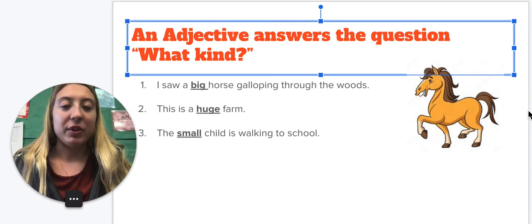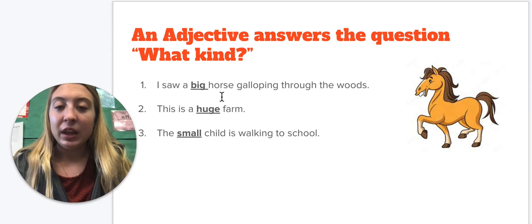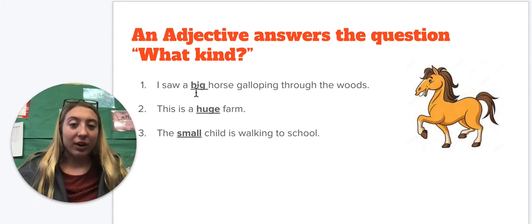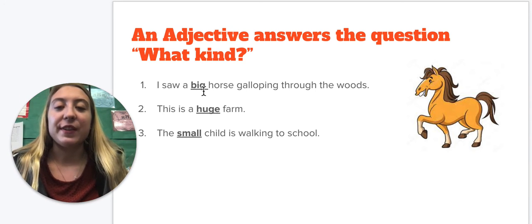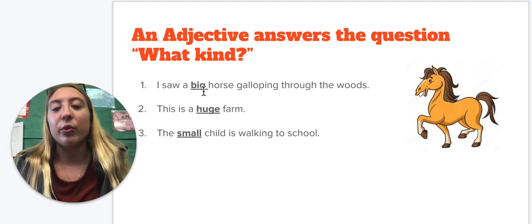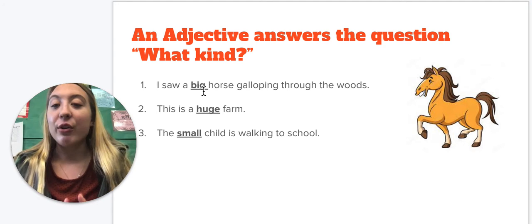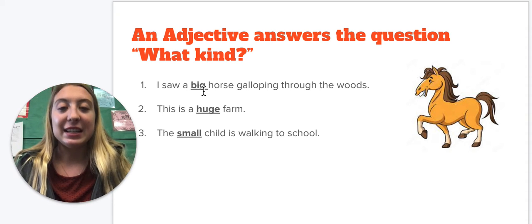So now if I'm looking at it, I see horse, and I can say, what kind of horse? It's a big horse. So an adjective is just going to add some description. Because if I just say, I saw a horse galloping through the woods, in your head you could think of any horse. But now you know, it is a big horse, so it makes the sentence more detailed.